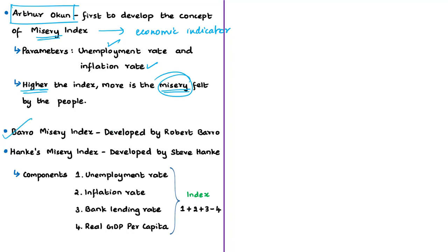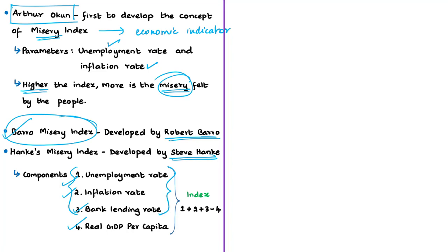This index was further modified by several economists. A notable modification was made by Robert Barro, also an American economist — his version is known as the Barro Misery Index. Another modification was made by American economist Steve Hanke, who built upon Barro's index and started applying it to countries beyond the USA. The modified misery index now has four components: rate of unemployment, inflation rate, bank lending rate, and the percentage change in real GDP per capita. The first three are bad components — if higher, people are in more misery — but the index is offset by GDP per capita growth, which is the good component.